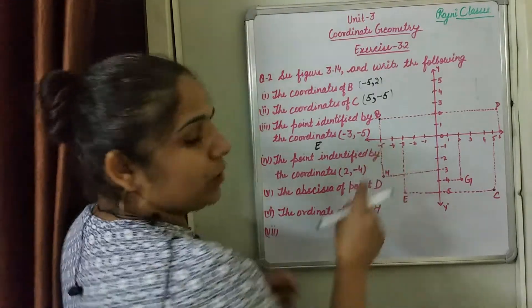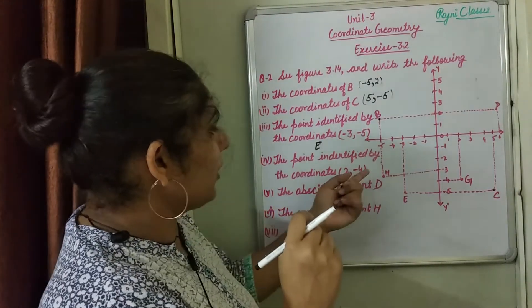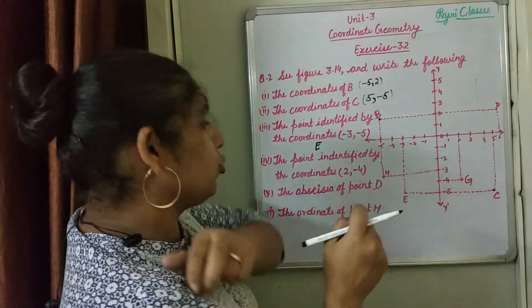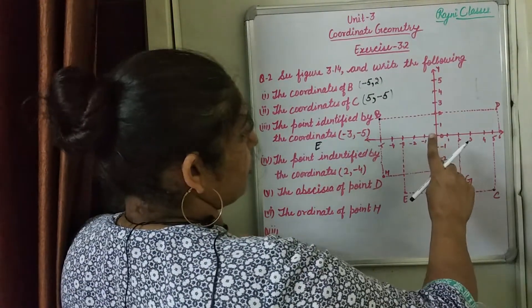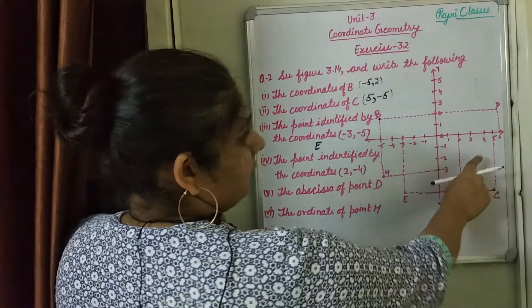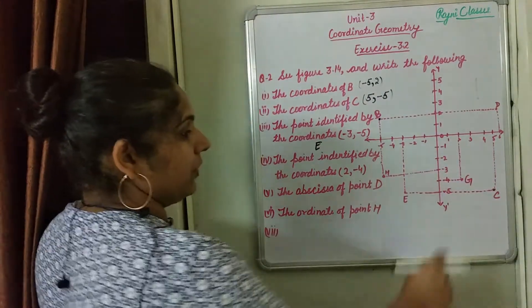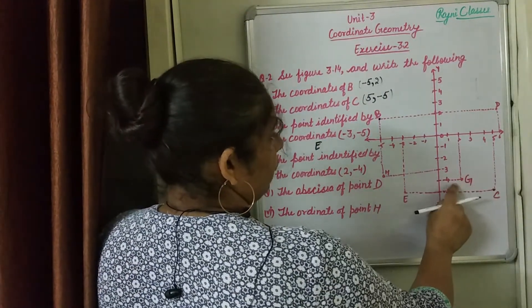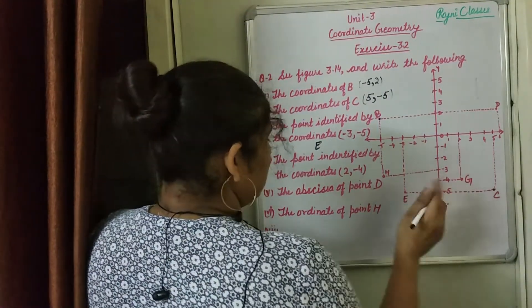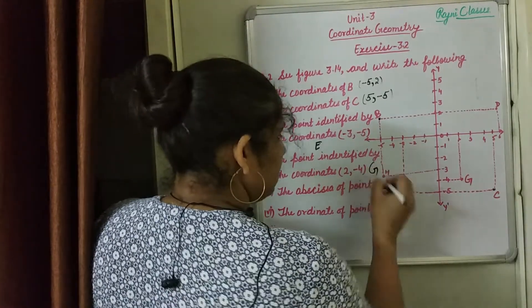Minus 4, 2. The X axis is positive here — 4th quadrant. The point is 2 and minus 4. This is G. Which point is G?